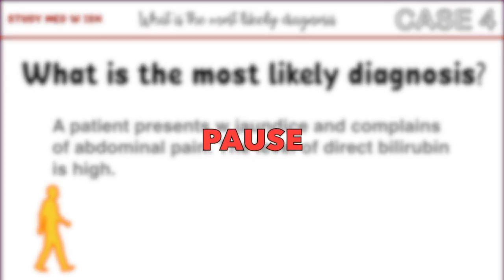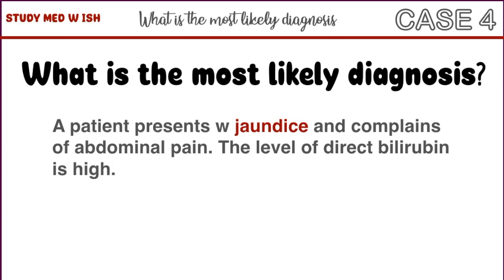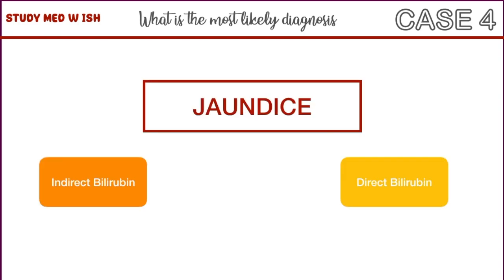Pause this video and let me know in the comments what you think the most likely diagnosis is. In this question, we're supposed to focus on two major things: jaundice and abdominal pain. Jaundice is caused whenever the level of bilirubin is high. Bilirubin is of two types: direct bilirubin and indirect bilirubin.